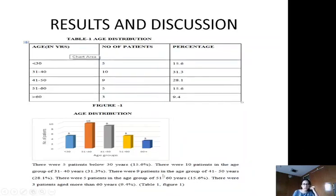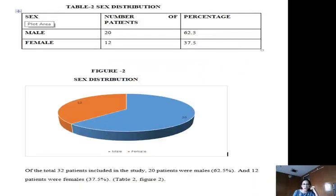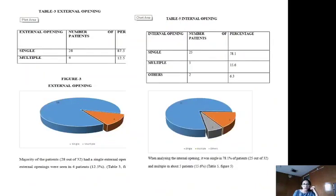Results: Regarding age distribution, there were 5 patients below 30 years, 10 patients in the age group of 31 to 40, 9 patients in the age group of 41 to 50, and 3 patients aged more than 60 years. Of the total 32 patients, 20 were male and 12 were female. Regarding distribution of external and internal openings: 28 patients had a single external opening and 4 had multiple external openings. The internal opening was single in 78.1% of patients (25 out of 32) and multiple in 5 patients, corresponding to 15.6%.